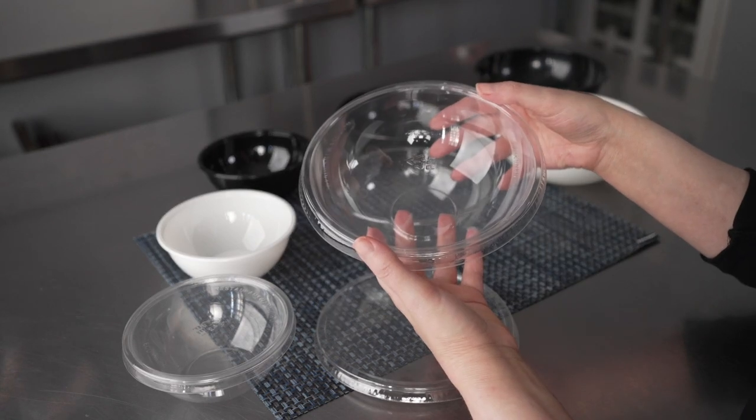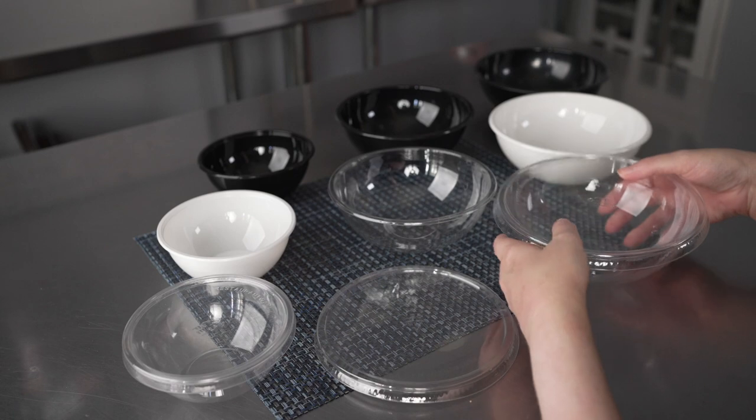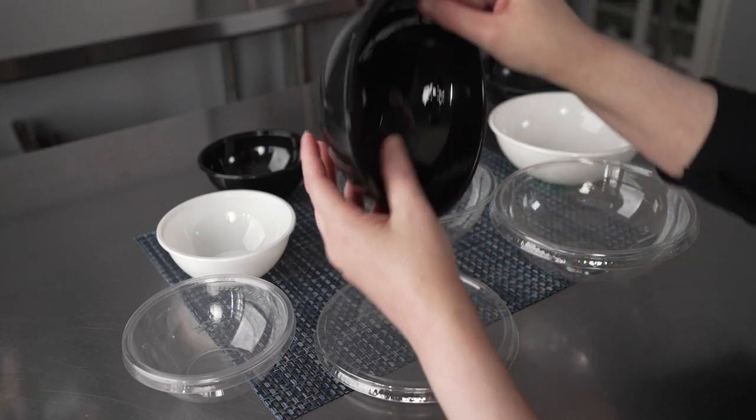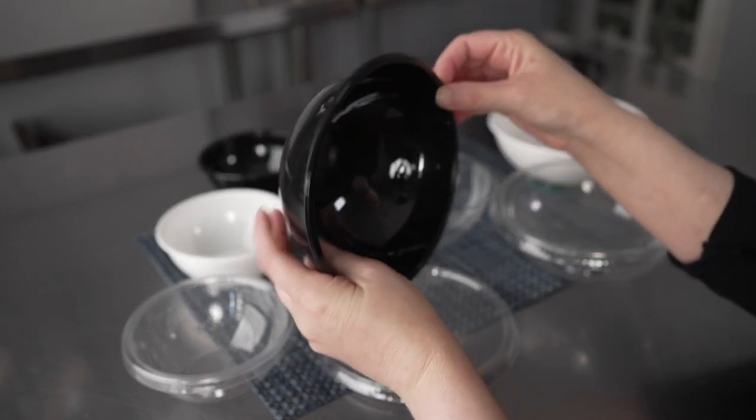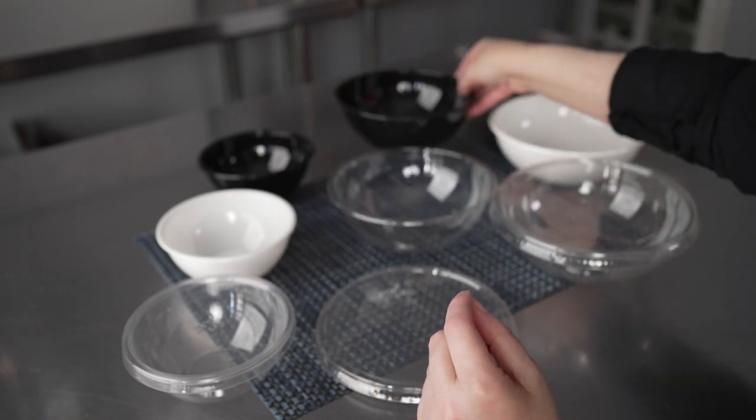They're all made from recyclable plastic and they're really nice and sturdy. You can see you have a great sturdy reinforced rim on these to help keep them from warping and allow them to hold really heavy foods.